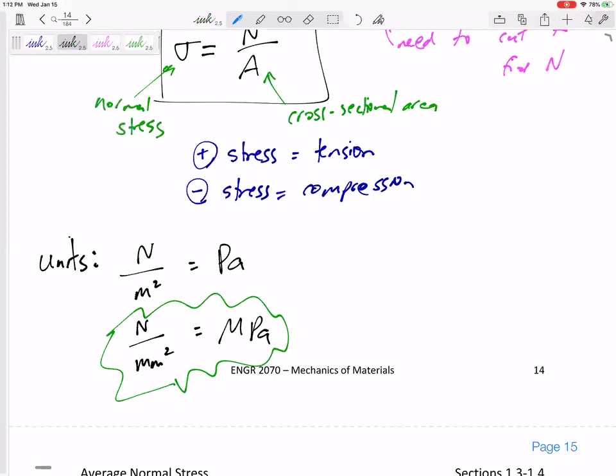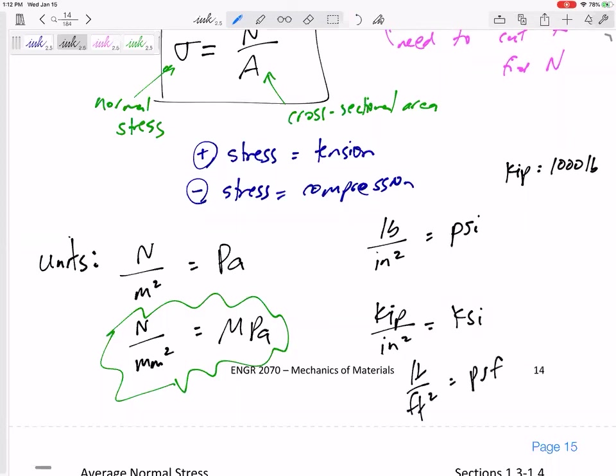How about English units? I don't mind English units. A pound over inches squared—PSI, pound per square inch. A kip over inches squared—KSI. Y'all do know that one kip is a thousand pounds. So English units, there's kind of no conversion. It's just if you're given pounds over inches squared, PSI; if you're given kips over inches squared, KSI. A pound over feet squared—PSF, pound per square feet.